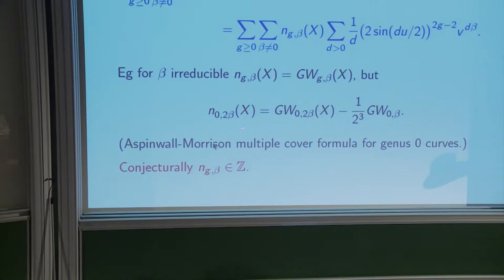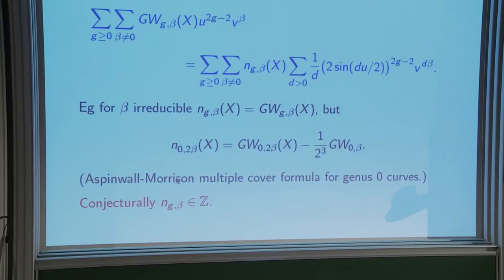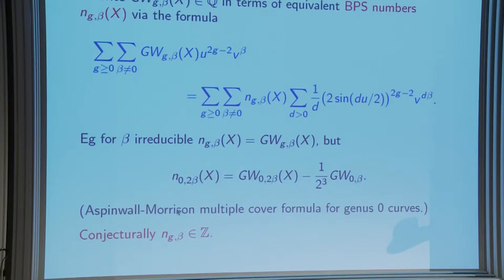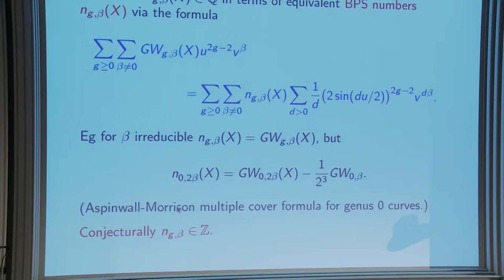To next order, once I double the class in genus zero, I count curves in class 2β and subtract off a contribution from those in class β which have been multiply covered — the contribution given in genus zero by the Aspinwall-Morrison multiple cover formula. This is the prediction from this formula. These are conjecturally integers, and indeed they are in all cases where they've been computed.